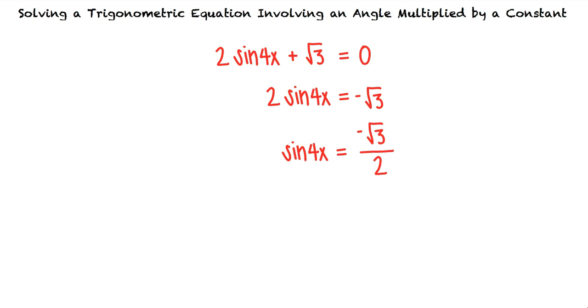We can let 4x equal theta to work in terms of angles we know. Negative square root 3 over 2 is one of the common trigonometric values for sine, so we know that if theta equals 4 pi thirds or 5 pi thirds, sine theta equals negative square root 3 over 2.